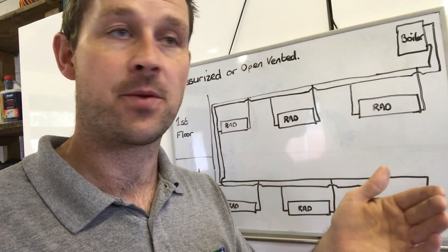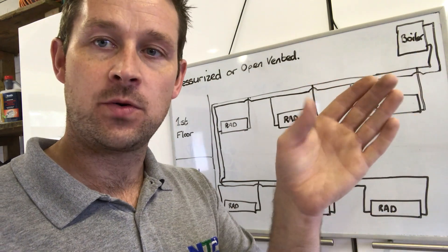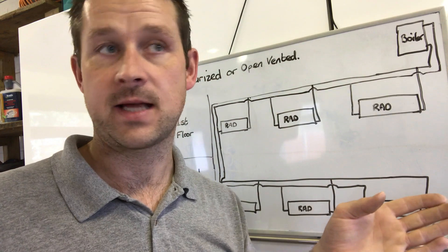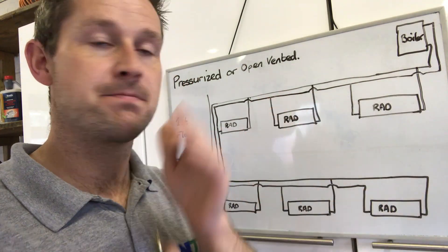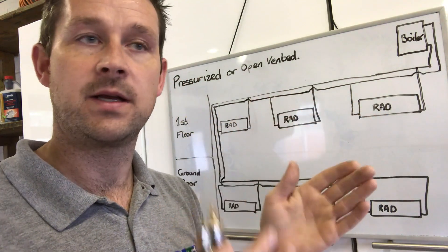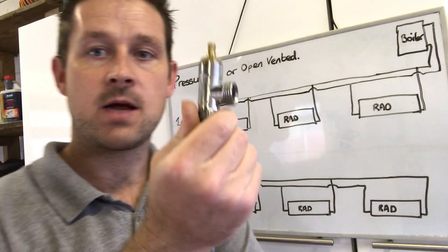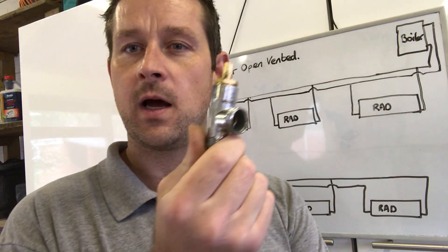You'll notice the lock shields will always be on the left hand side, sometimes they're on the right, but just match it up to whichever side so it all looks balanced in the house.